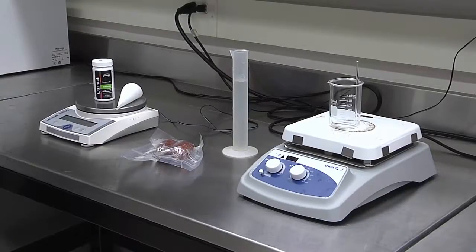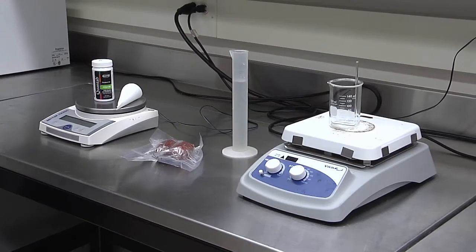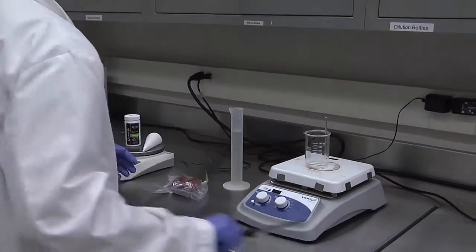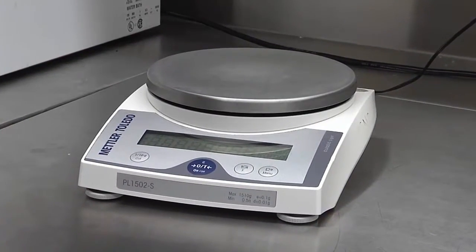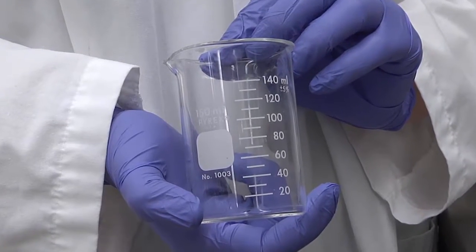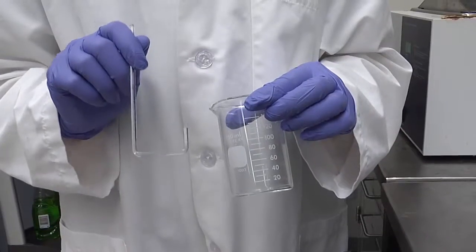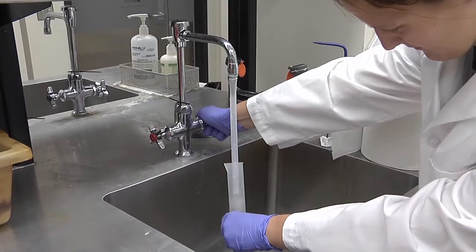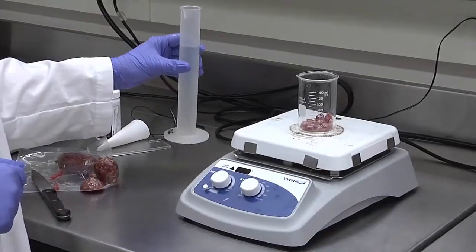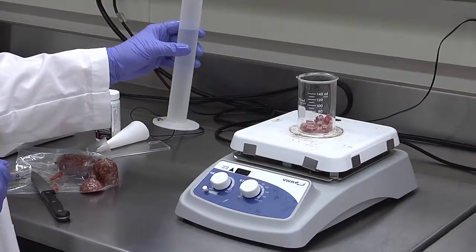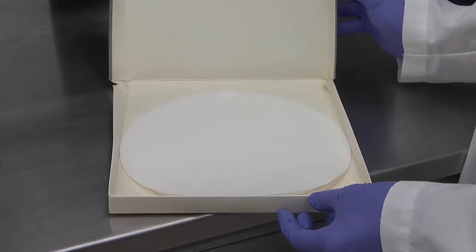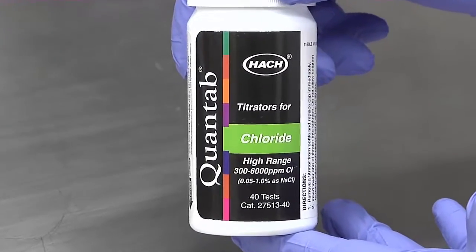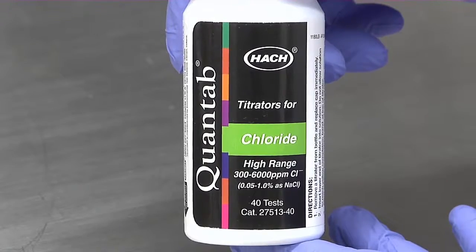To determine the salt content of meat products, several supplies will be needed and include the following: scale, two 150 milliliter glass beakers, glass stir rod, hot plate, distilled water, 100 milliliter graduated cylinder, Number 1 Wattman filter paper, and Number 1176 Quantab High Range Chloride Test Strips by Hawk.